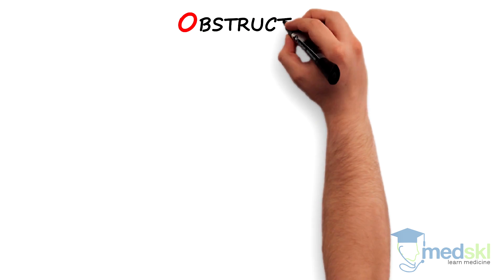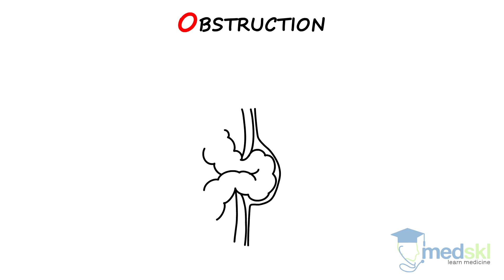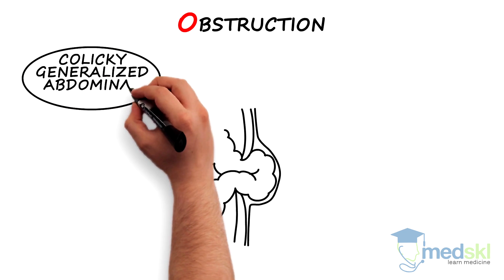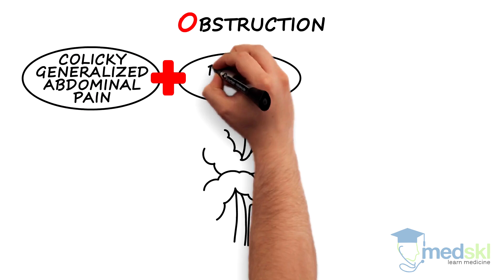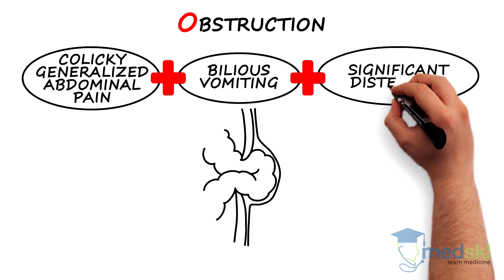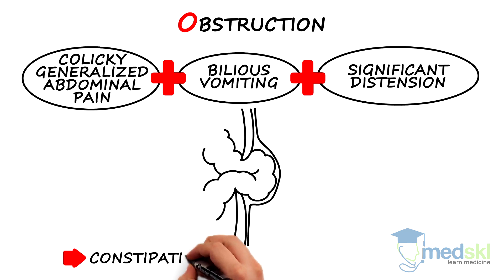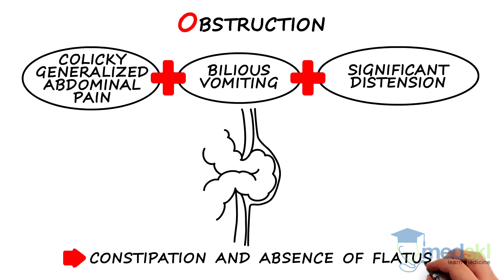O is for obstruction. Patients with bowel obstructions typically present with colicky, generalized abdominal pain, bilious vomiting and significant abdominal distension. They will report constipation and absence of flatus. Remember to check for hernias in any patient who has a bowel obstruction.